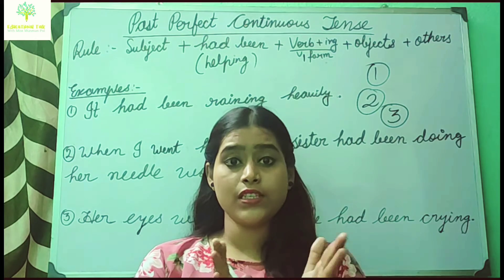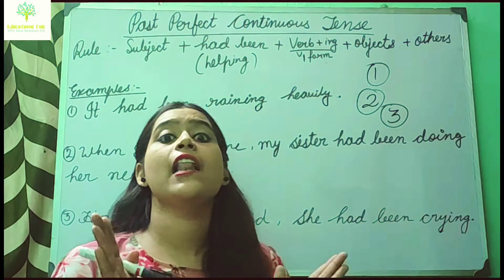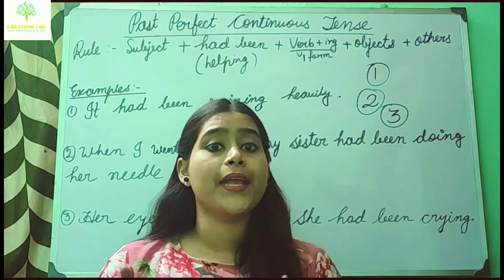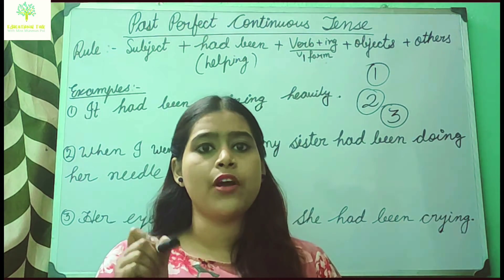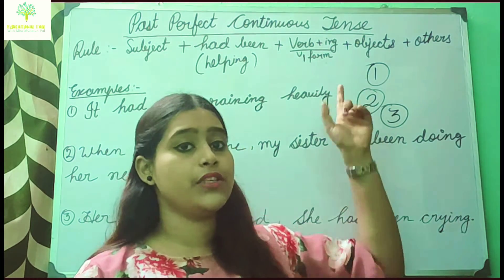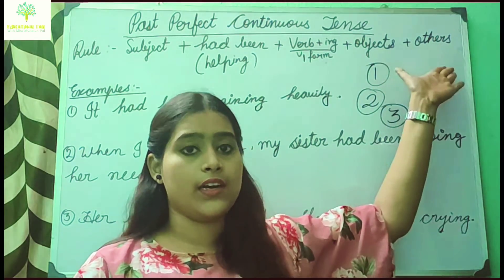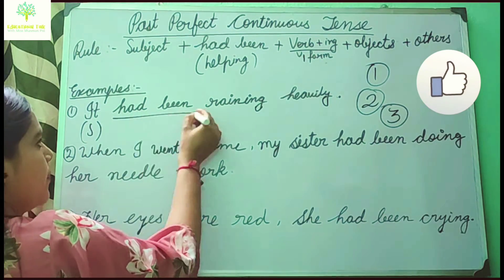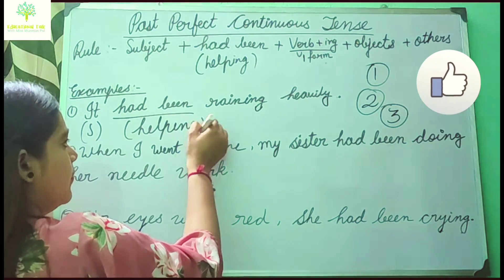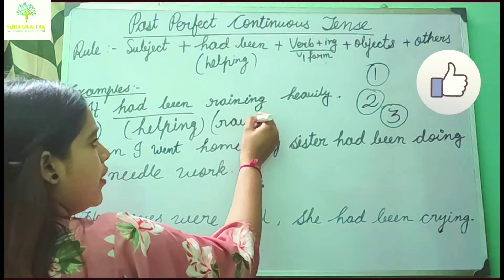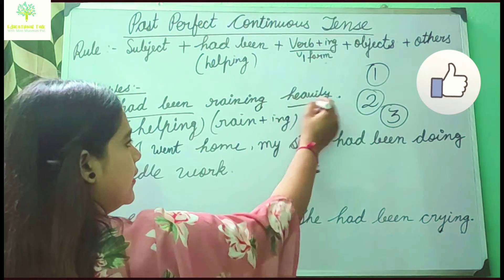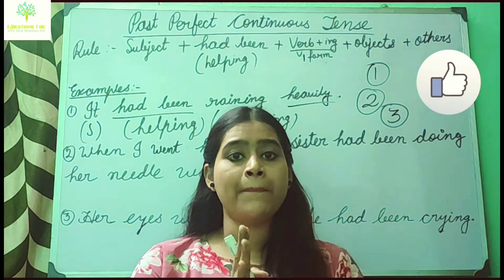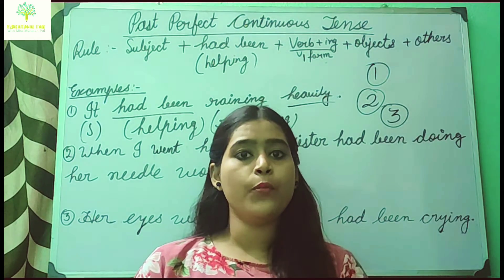Now I will tell you how to form sentences. The structure is: Subject + had been + V1+ing (present form with -ing, like 'raining' from 'rain') + objects + others. For example, 'It had been raining heavily.' Here 'it' is the subject, 'had been' is the auxiliary, and 'raining' is the V1 form plus -ing.